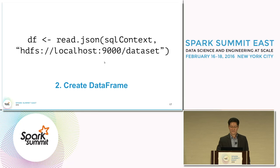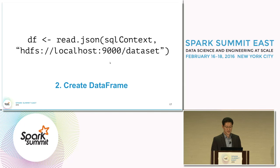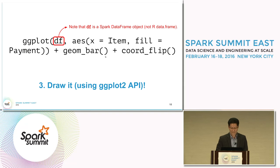The second step creates the data frame from whatever data sources you like. In this case, we used the Hadoop Distributed File System with JSON file format. The third step is to just draw it using the familiar ggplot2 API.